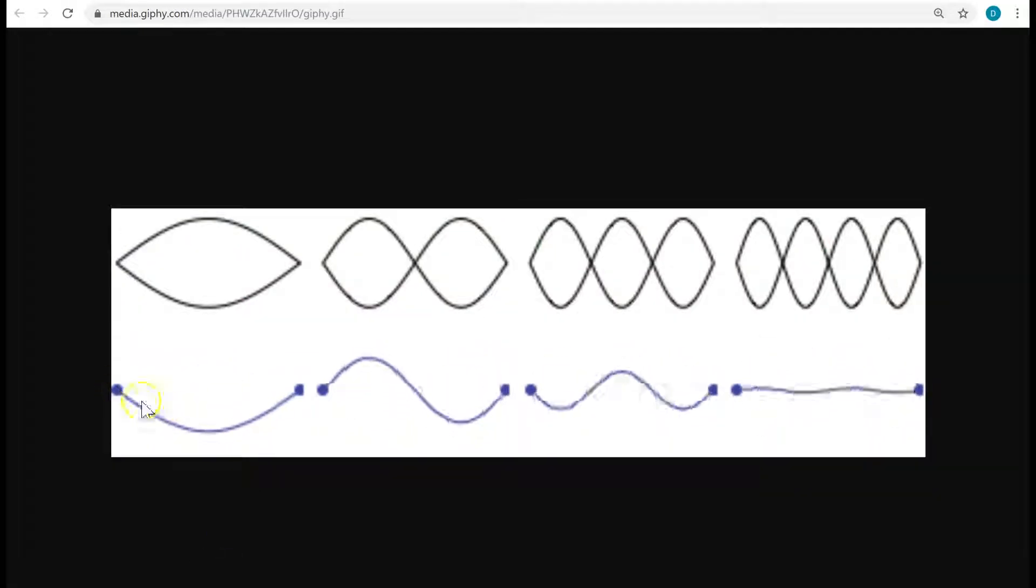Standing waves can have just a single antinode, that's the part at the middle that reaches maximum displacement. They can have multiple antinodes, those are the parts here, now we have two antinodes that reach maximum displacement. This is three antinodes and four antinodes. The locations like the ends, where the waves don't move at all, those are called nodes. So there's a node right here, there's a node right here, a node right here, and so forth.